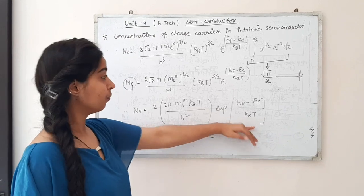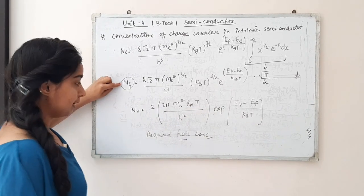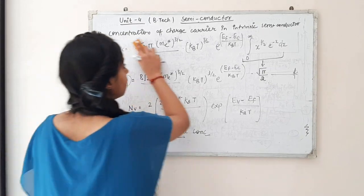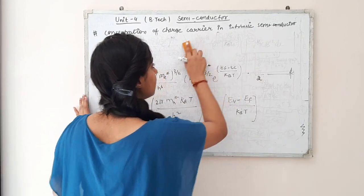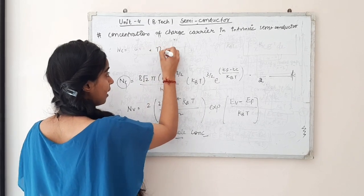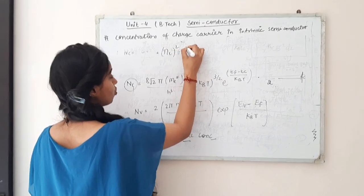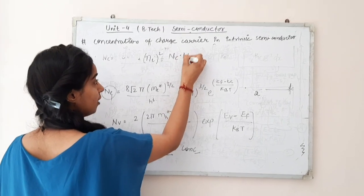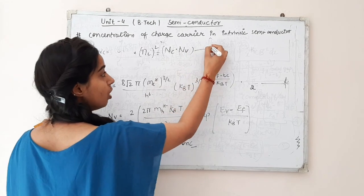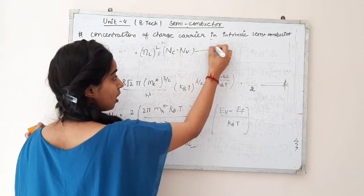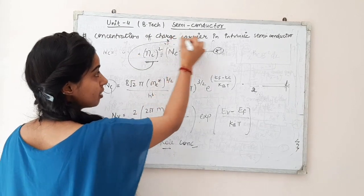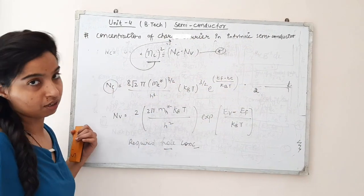Now we get both Nc and Nv for the intrinsic semiconductor. The intrinsic carrier concentration ni is defined such that ni² = Nc × Nv. By putting these two values into this formula, we get ni², which is the charge carrier concentration in the semiconductor.